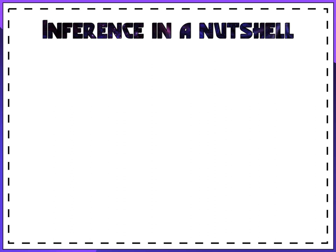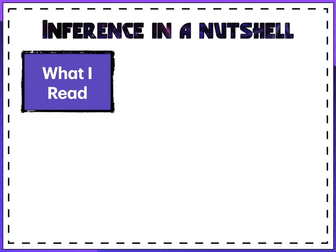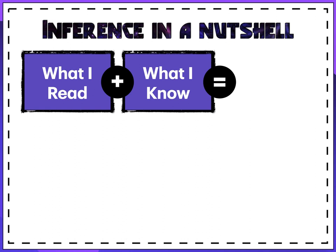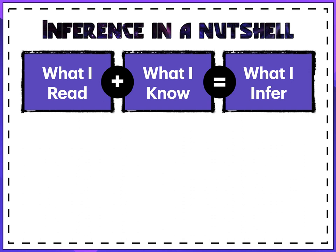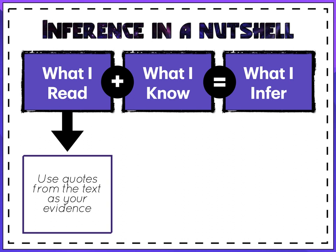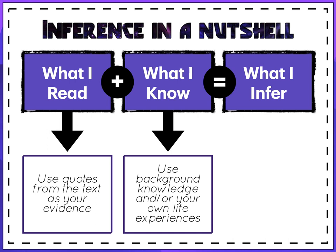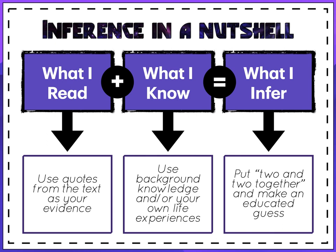Inference in a nutshell: you take what you read, combine it with what you already know, and that gives you what you infer. When using what you read, use actual quotes from the text as your evidence. What you know might be background knowledge, your own life experience, or something else you've read. On the GED, they'll have you make inferences based on generalized life knowledge plus whatever you're reading — putting two and two together to make an educated guess.